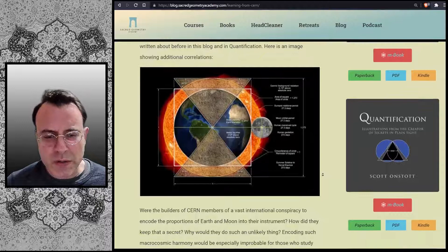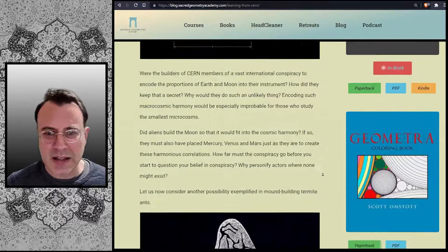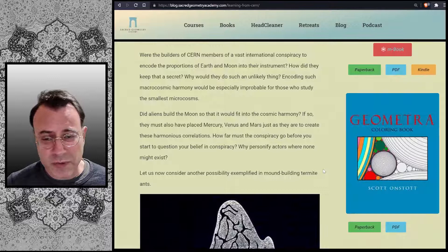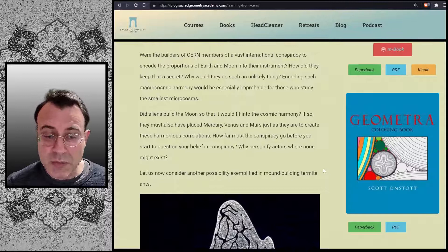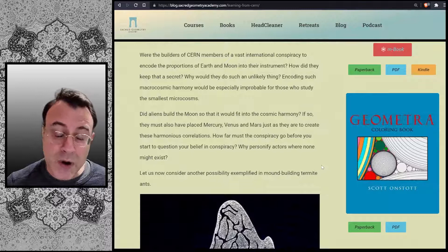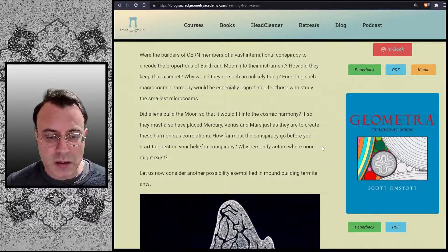Were the builders of CERN members of a vast international conspiracy to encode the proportions of the Earth and Moon into their instrument? How did they keep that a secret? Why would they do such an unlikely thing? Encoding such macrocosmic harmony would be especially improbable for those who study the smallest microcosms. Did aliens build the moon so that it would fit into the cosmic harmony? If so, they must have also placed Mercury, Venus and Mars just as they are to create these harmonious correlations. How far must the conspiracy go before you start to question your belief in conspiracy?